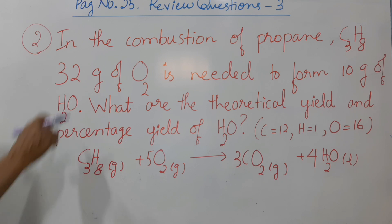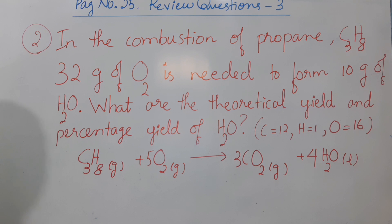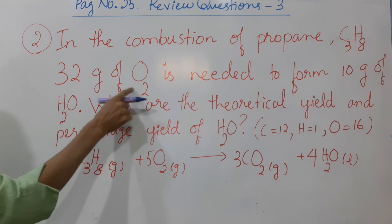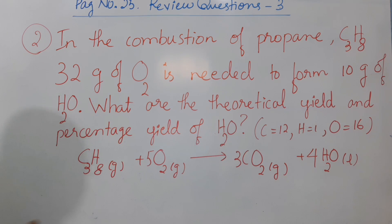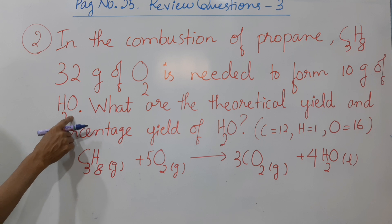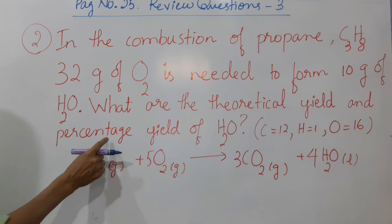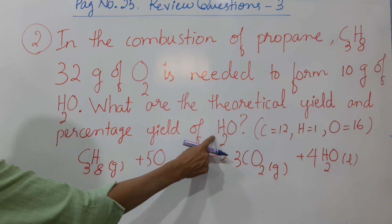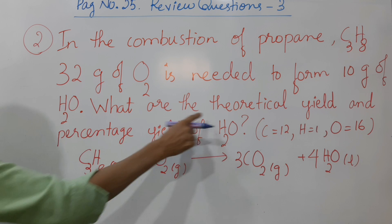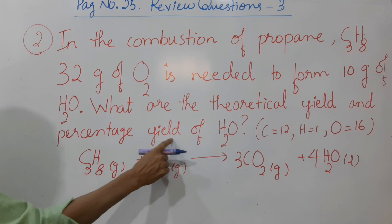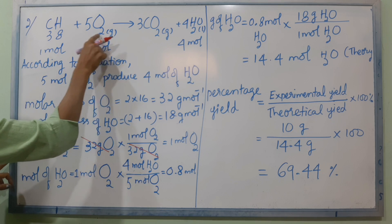Number two: in the combustion of propane C3H8, 32 grams of O2 is needed to form 10 grams of H2O. What are the theoretical yield and percentage yield of H2O? Now let's look at this equation.